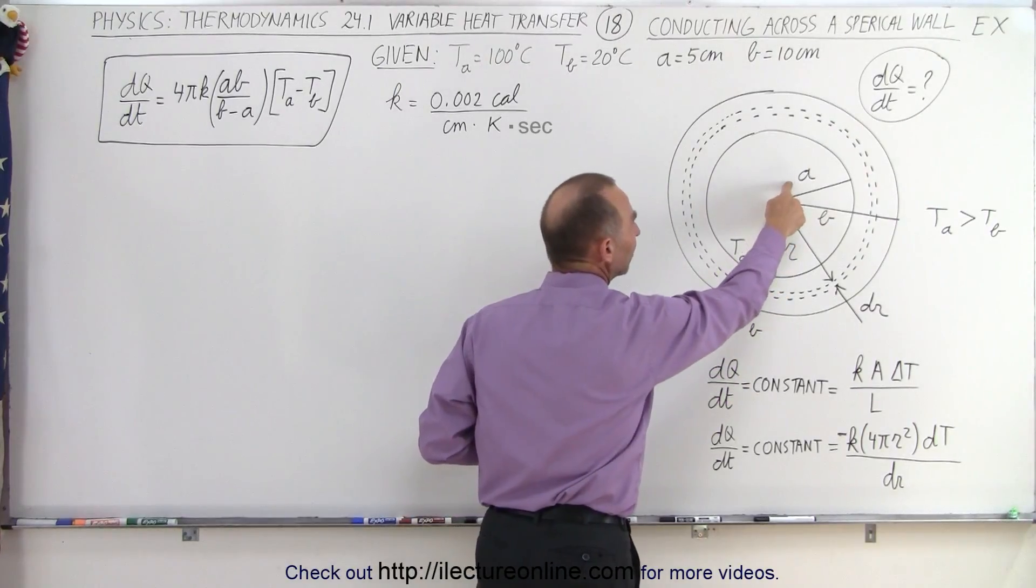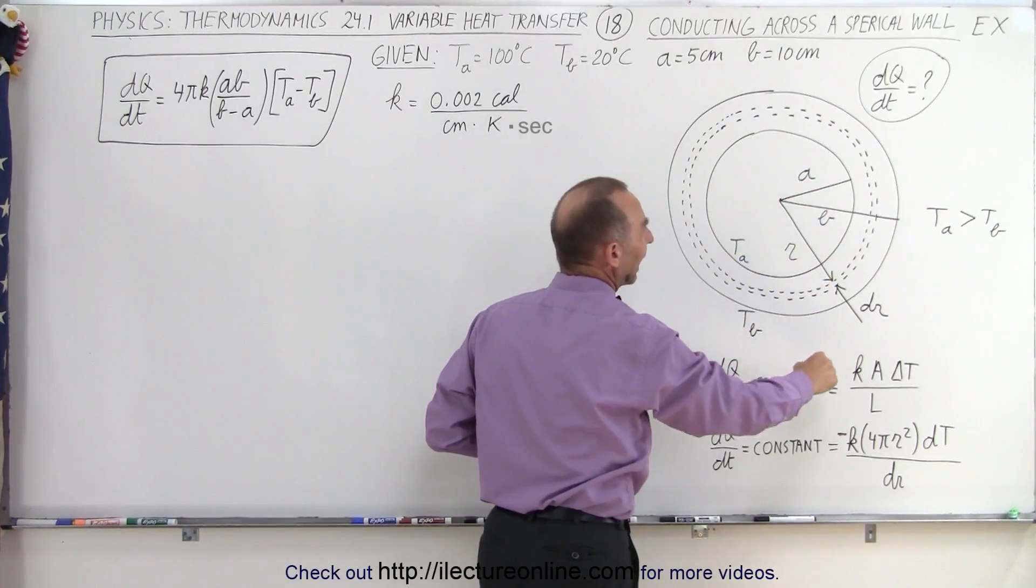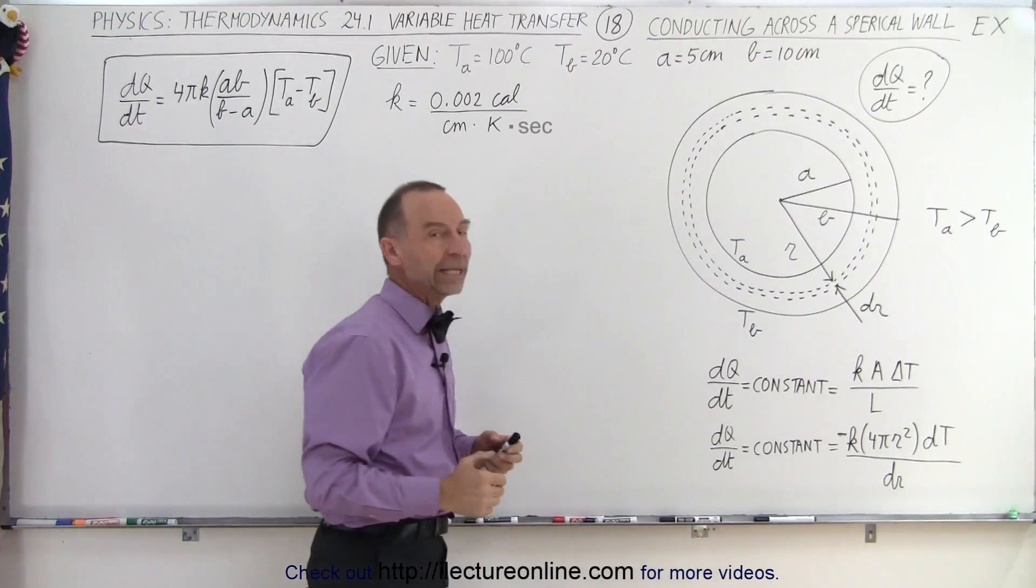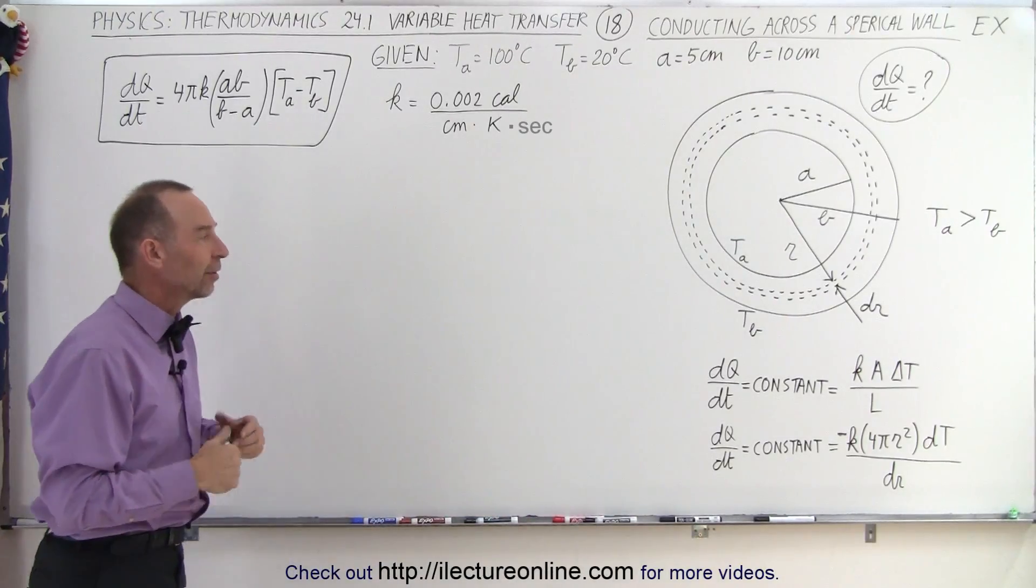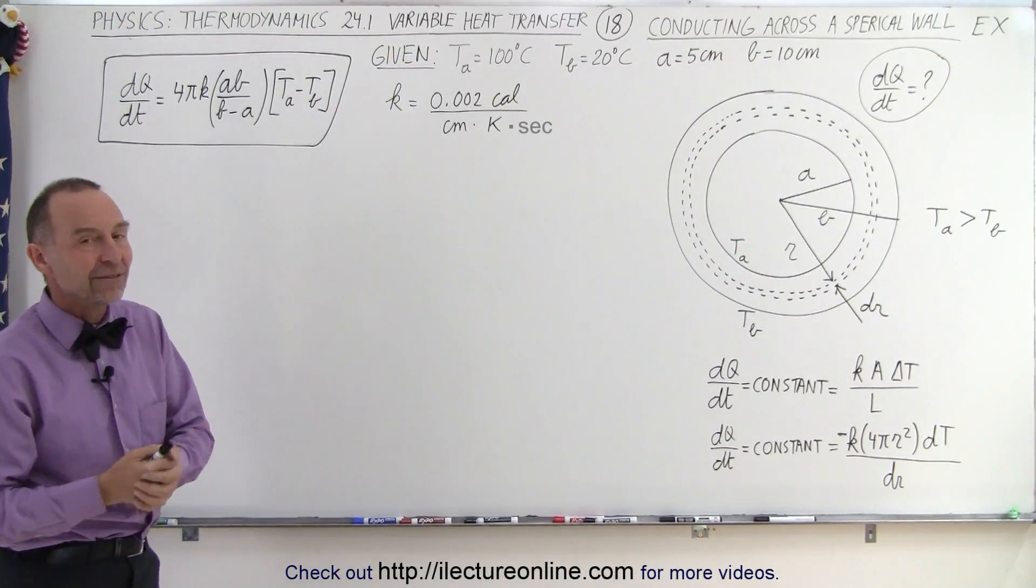with a radius of A on the inside, B on the outside, and a difference in the temperature between the inside and the outside expressed in terms of TA and TB.